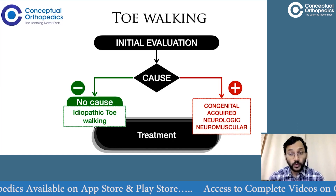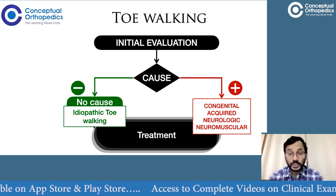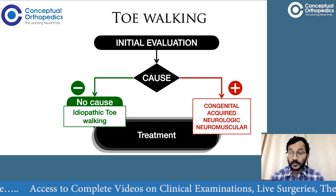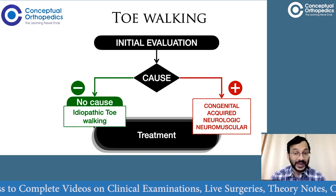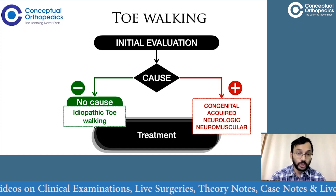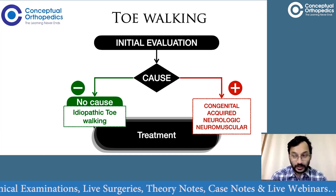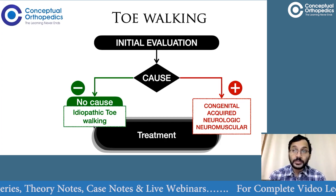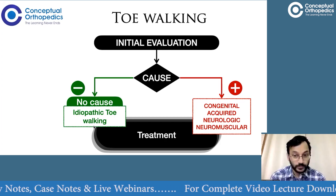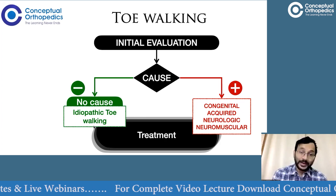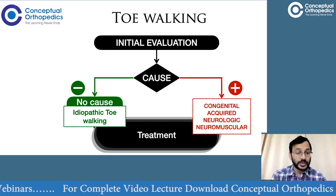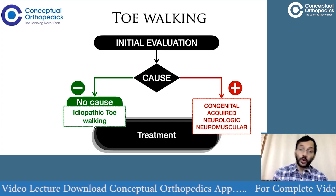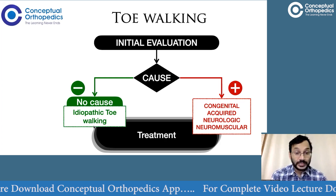One of the most common causes for abnormal toe walking seen in children would be spastic conditions like cerebral palsy. When we don't find any other organic causes — not congenital, not acquired, not neurologic — then it is called idiopathic toe walking. In idiopathic toe walking, a vast majority of children do suffer from some sort of autistic spectrum disorder, ranging from mild to severe. About 40 to 50% of children with idiopathic toe walking have some amount of autism, but autism is not considered a direct cause — that is why we still call it idiopathic.